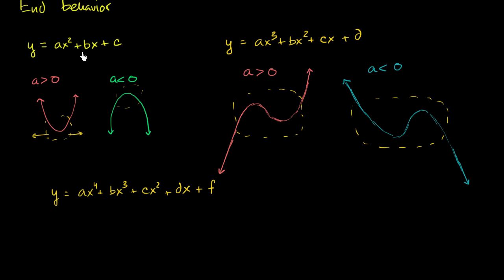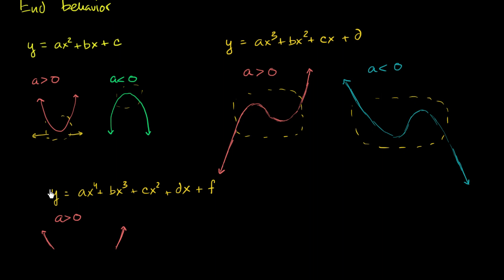Its end behavior: if x is really, really, really negative, x to the fourth is still going to be positive. And if a is greater than 0, when x is really, really, really negative, we're going to have really, really positive values — just like a second degree polynomial. And when x is really positive, same thing: x to the fourth is going to be positive, times a is still going to be positive. So its end behavior is going to look very similar to a second degree polynomial.